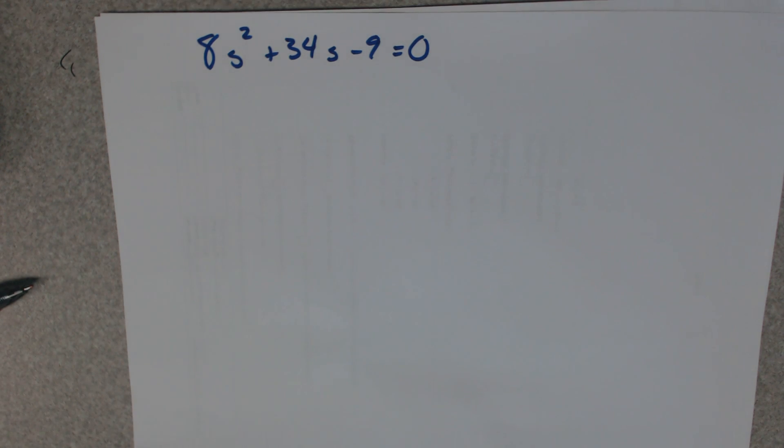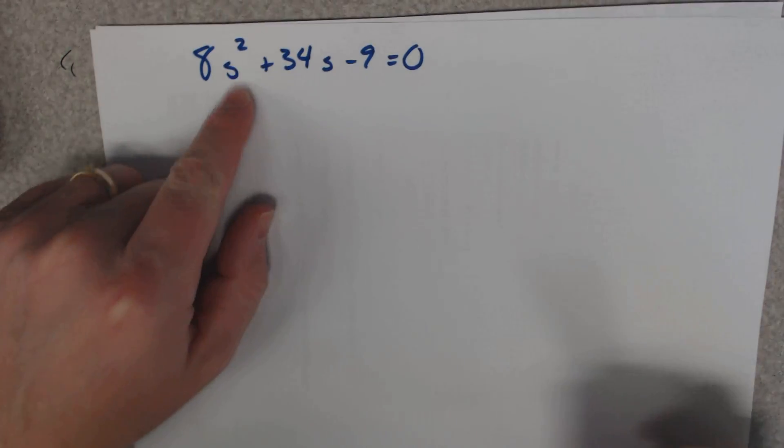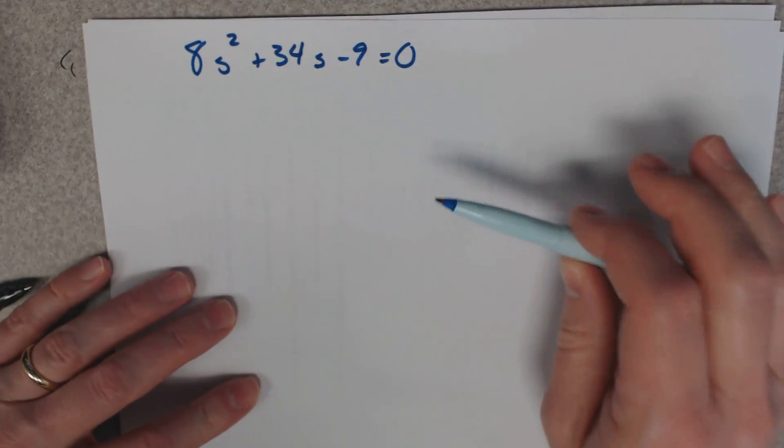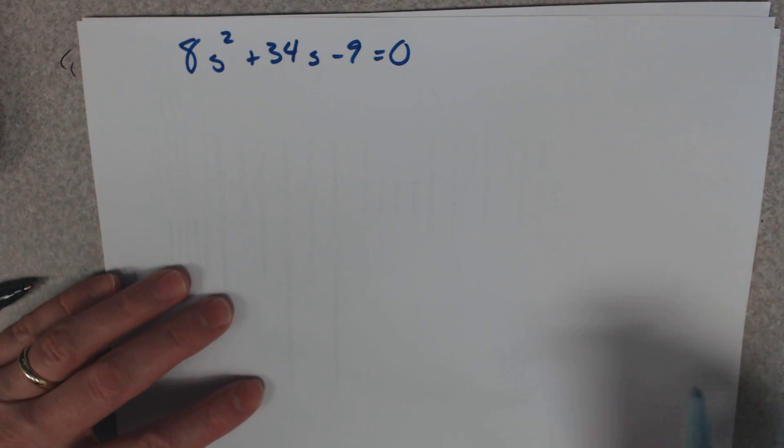Alright, so you're looking at a quadratic. The reason why you're looking at a quadratic is there's a power of 2, that's the highest power. And this whole equation says equals 0. So you've got a few options about how to solve this.